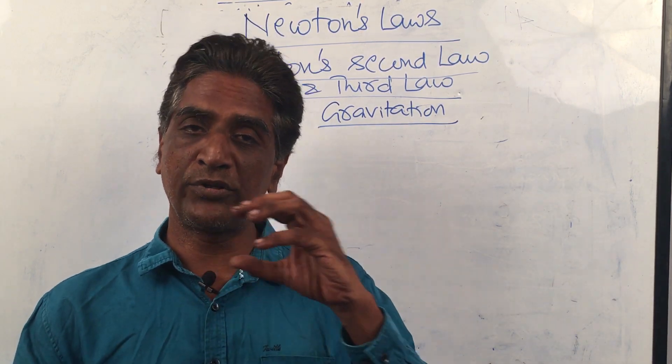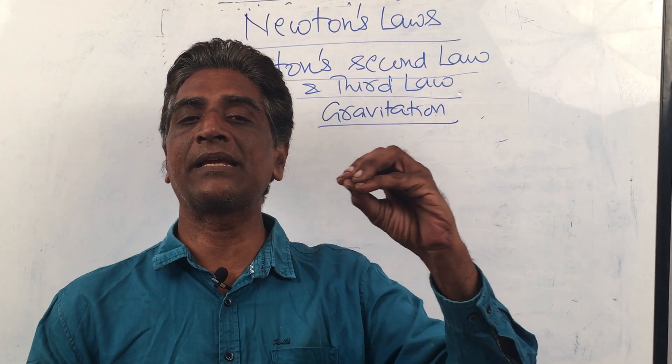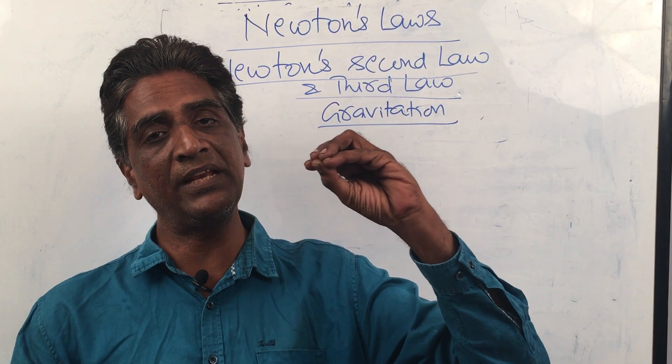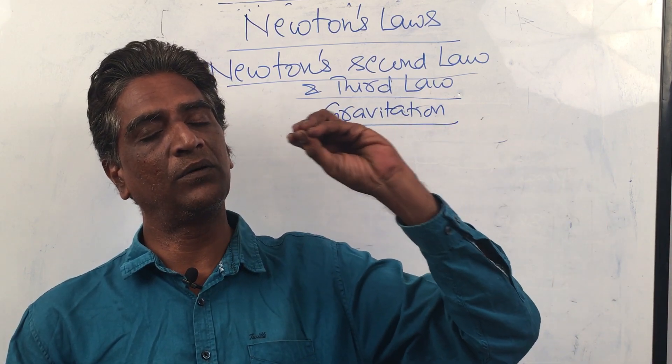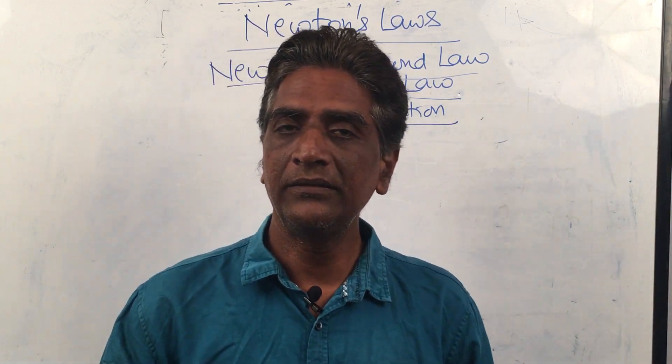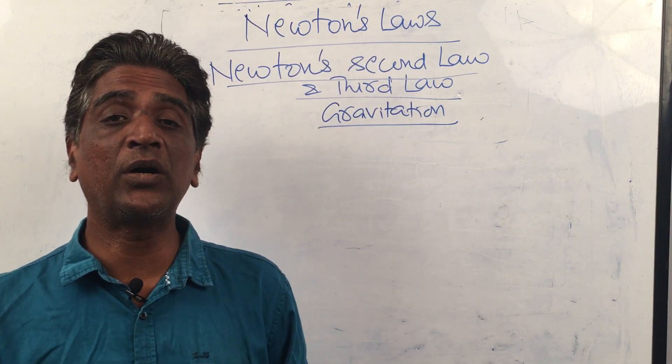If a body is in motion, let's say it is going by 10 meters per second velocity and if there is no friction, nothing obstructing it, no force acting on it, it will go on going. That is Newton's first law. Inertia of motion.